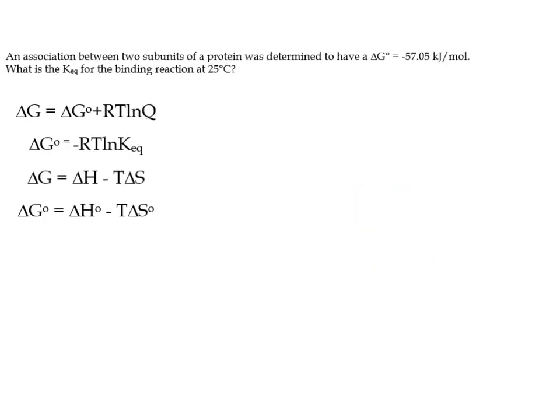So here's the first problem. An association between two subunits of a protein was determined to have a standard free energy change, right? Something you want to practice is looking for that little delta G naught. A standard free energy change of negative 57.05 kilojoules per mole. What is the Keq for the binding reaction at 25 Celsius? So kilojoules per mole. What is the Keq? And we know a standard here. We're asked for Keq. So we're going to want to use the one that connects the two things. We have a delta G naught and we have a Keq. So in this case, we're going to want to use this fella here. Delta G naught is equal to negative R times T times the natural log of Keq. And we're solving for Keq.